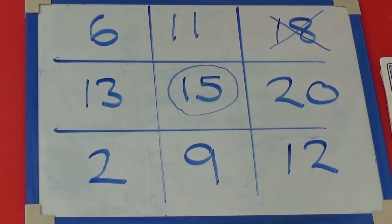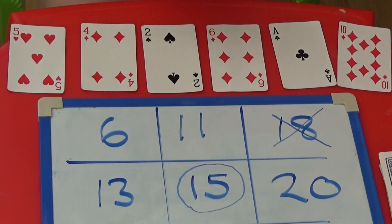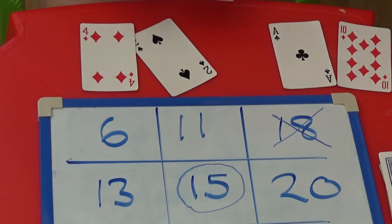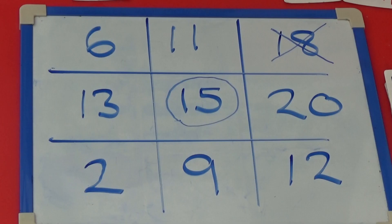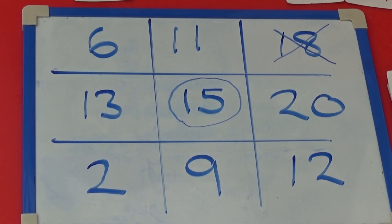With my cards I might try to make 13. I have 6, 5 and 2 which added together make 13. So I'm going to draw a nought on 13.